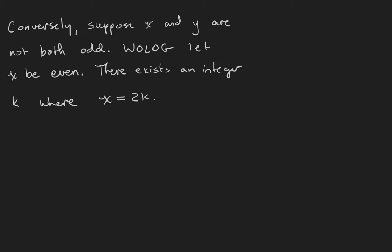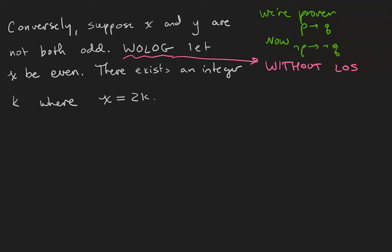So we've proven 'if p then q.' Now we're going to prove 'if not p then not q' to give us the other direction. Suppose x and y are not both odd, which means that one of them is even. I'll use WLOG — without loss of generality — meaning it doesn't matter which one is even. If y is the even one, I can just switch the names of x and y. So without loss of generality, let x be our even integer.